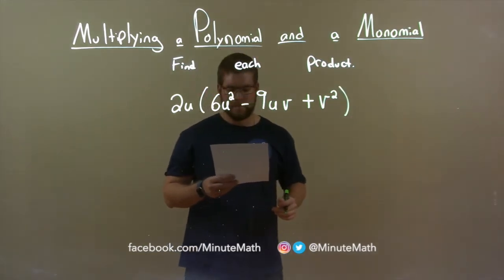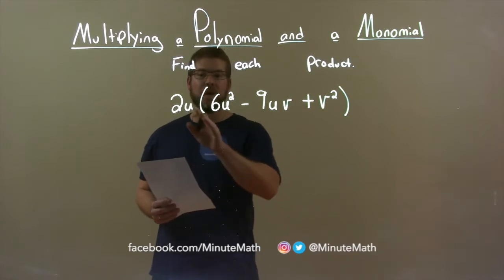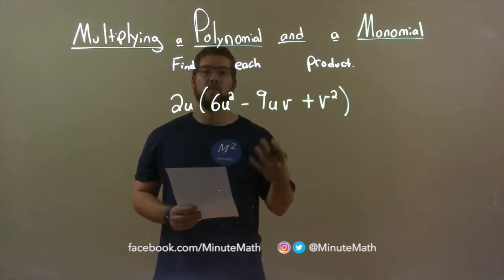Alright, got it all. Well, the first thing I want to do is take this 2u and multiply it to all three terms in the parenthesis.